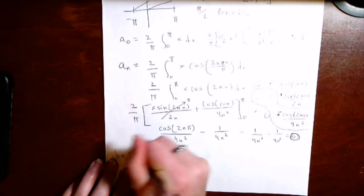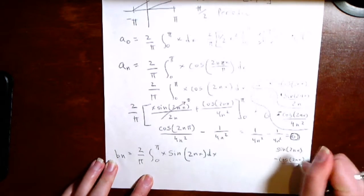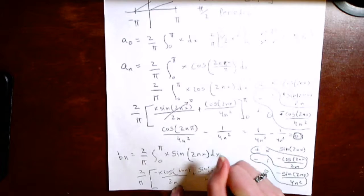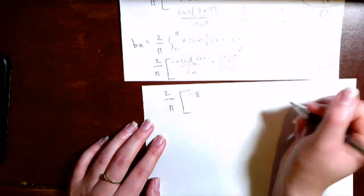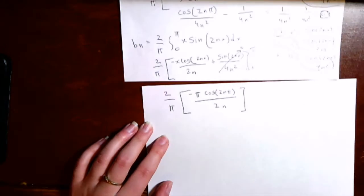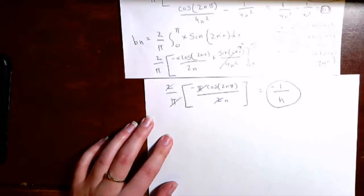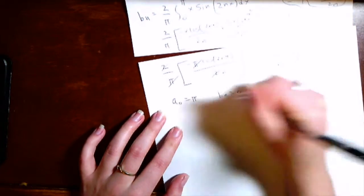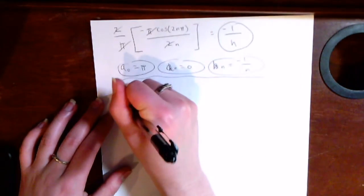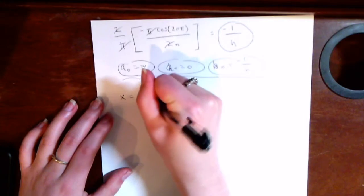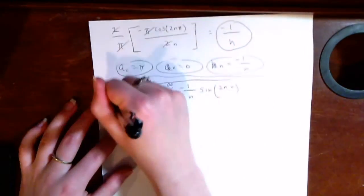For b_n, you compute 2 over π times the integral from 0 to π of x sine(2nx), then do integration by parts and plug in limits. The sine terms vanish due to sine(2nπ) and sine(0) both being 0. Cosine(2nπ) equals 1 regardless of n, and that term simplifies to −π/(2n), which reduces to −1/n. Now with a₀ = π, a_n = 0, and b_n = −1/n, you plug into the full Fourier solution format — which has the extra factor of 2 — and end up with: π/2 plus the sum from n=1 to infinity of (−1/n) sine(2nx).